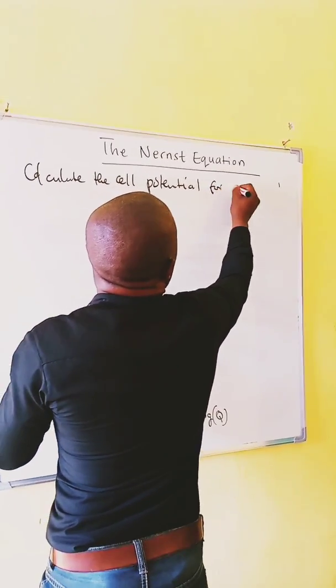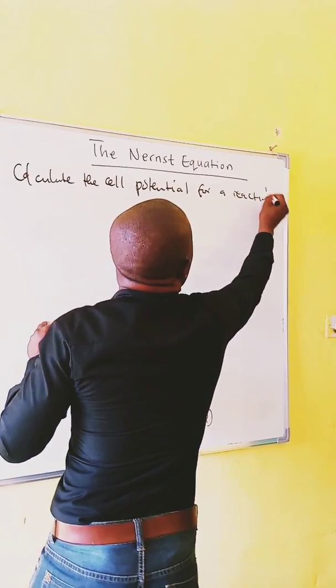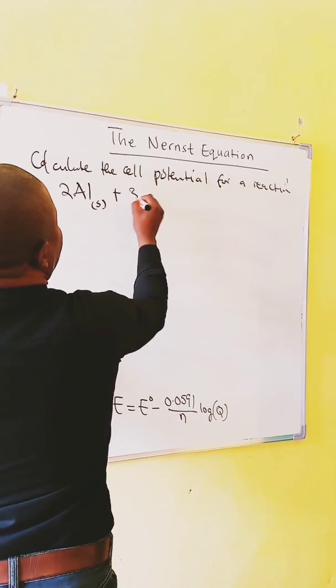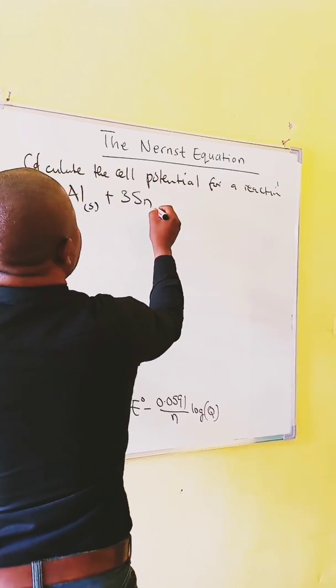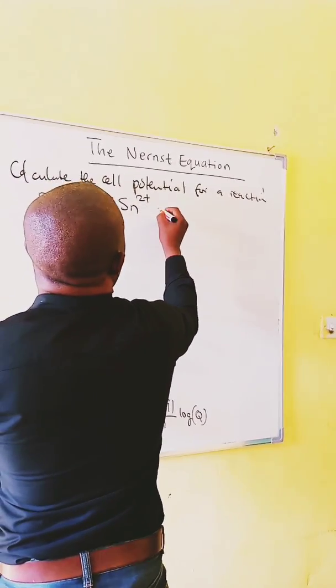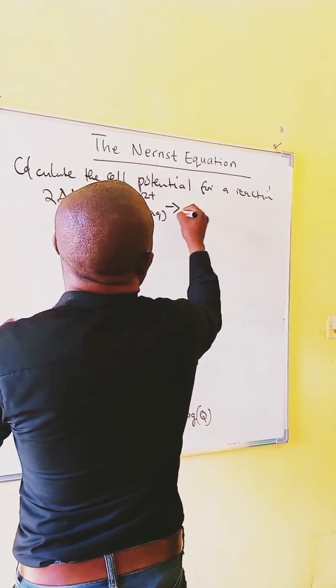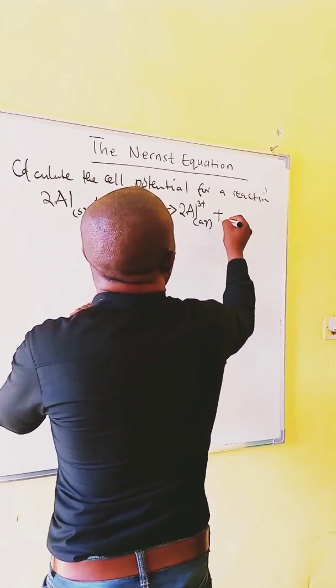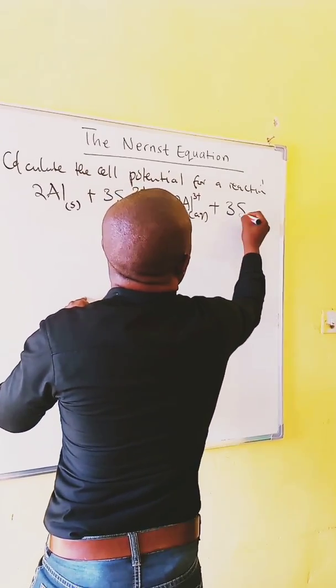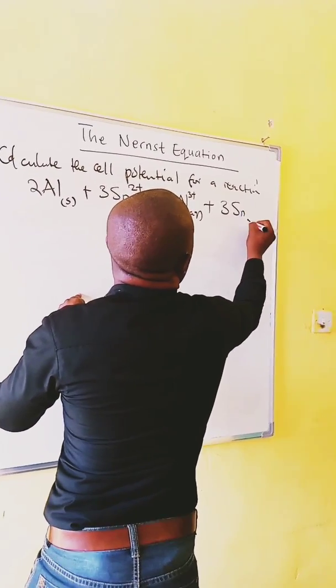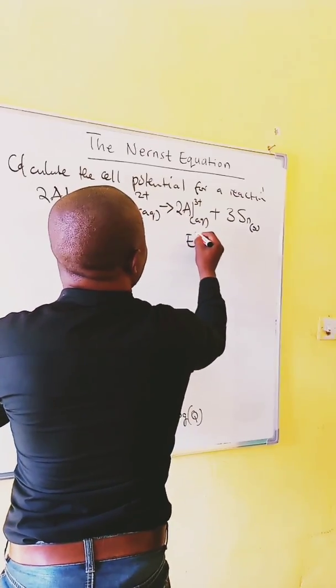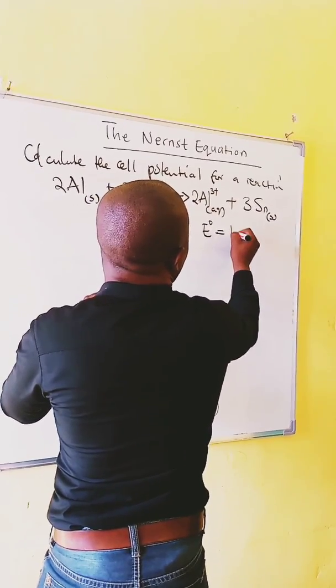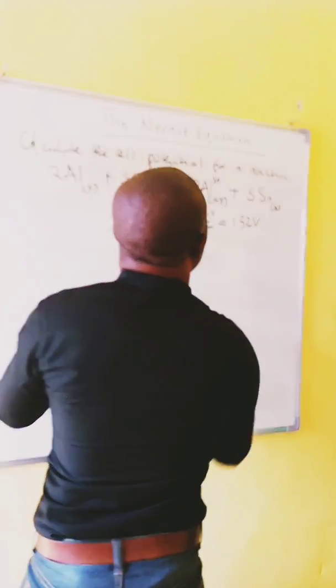for a reaction 2Al plus 3Sn²⁺ forms 2Al³⁺ plus 3Sn. The standard cell potential for this reaction is equal to 1.52 volts.